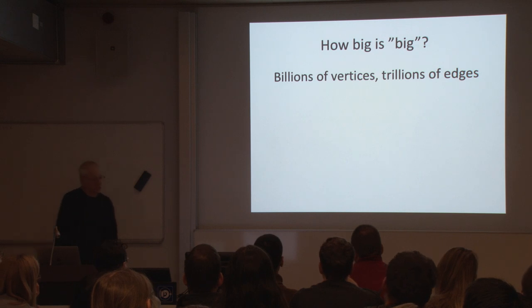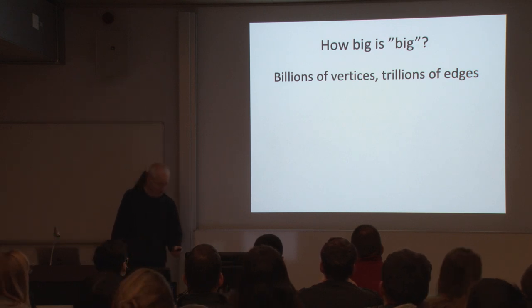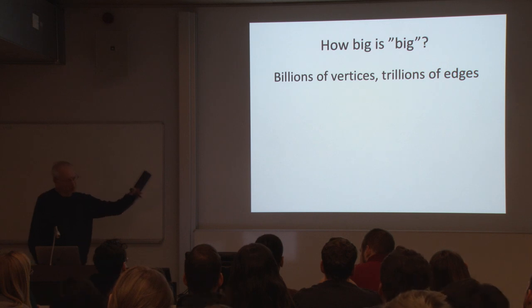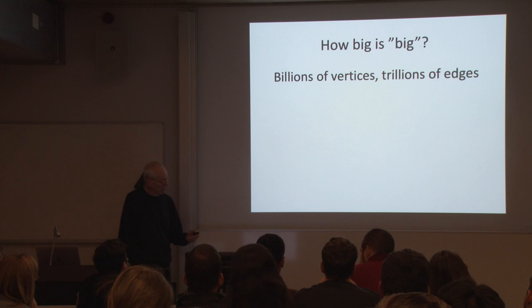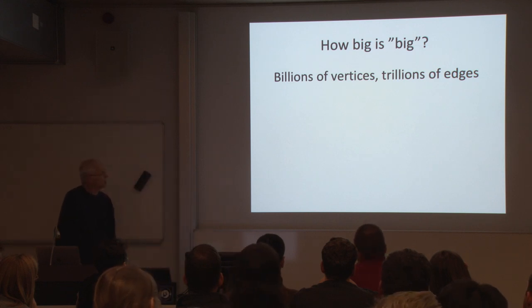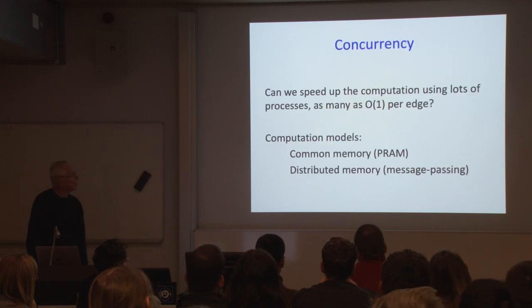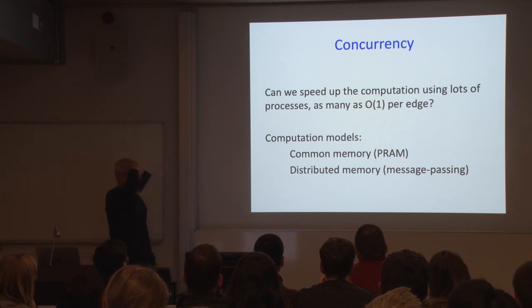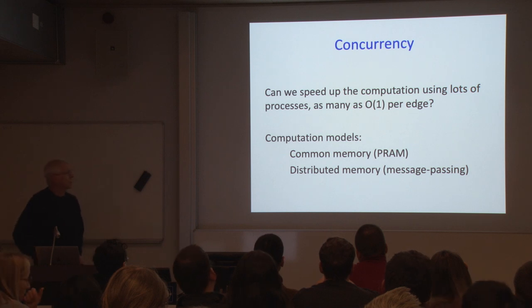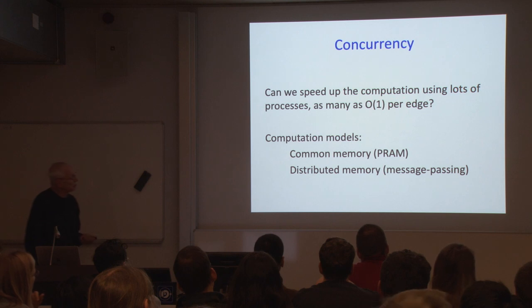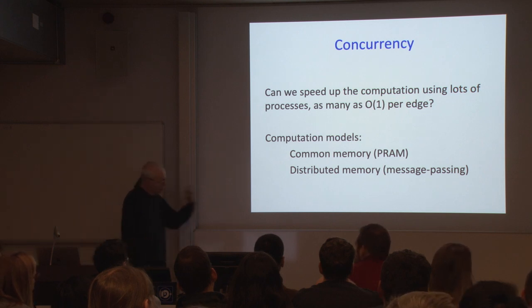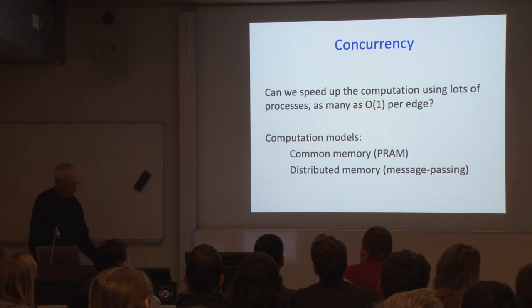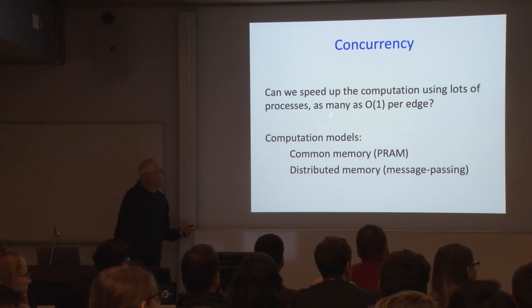We know that computers may be reaching a limit, and people are building more and more cores into computers. Can we take advantage of concurrency — of multiple processors — to speed up the computation? We can think of as many as a constant number of processors per edge or vertex. In this setting, there are two flavors of computational model: the shared memory model — parallel random access machines, the one we'll use here — and the distributed memory or message-passing model.